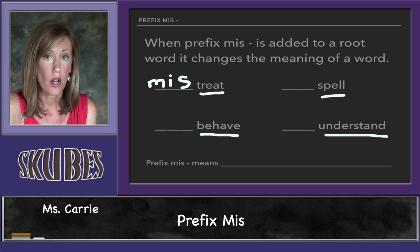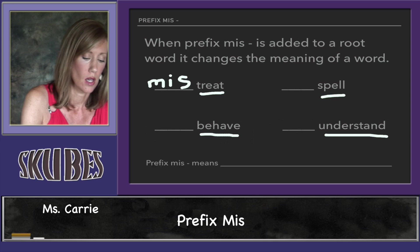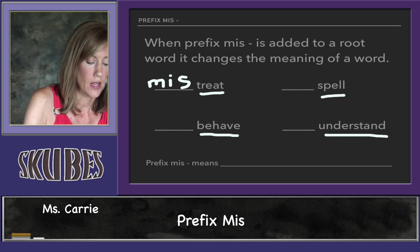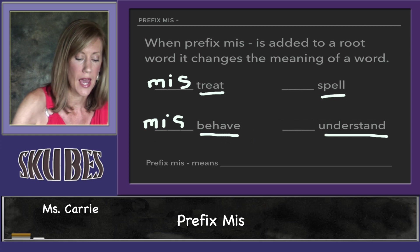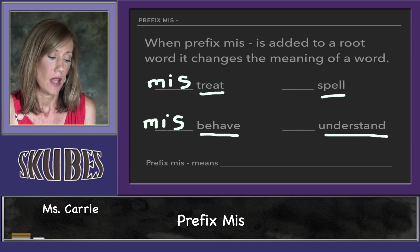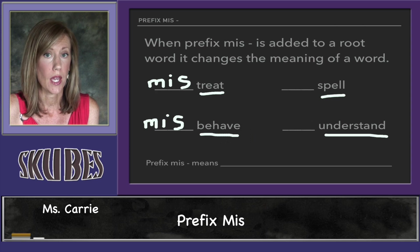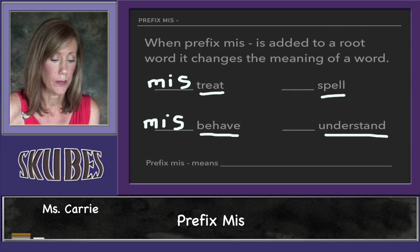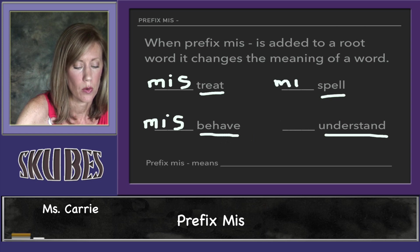If we put the prefix 'mis' in front of the root word 'behave,' we get 'misbehave,' and 'misbehave' means to not behave or to behave incorrectly.